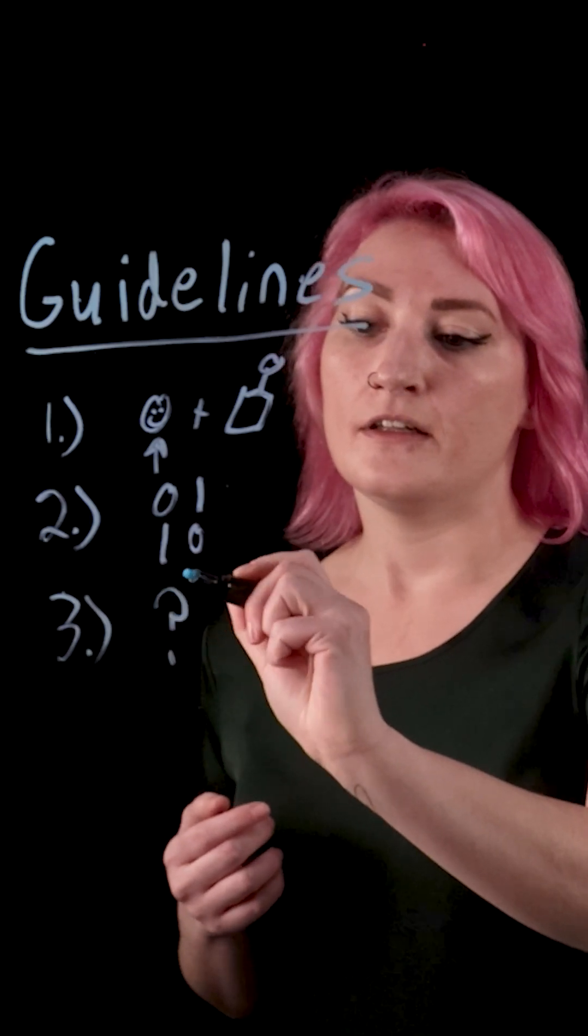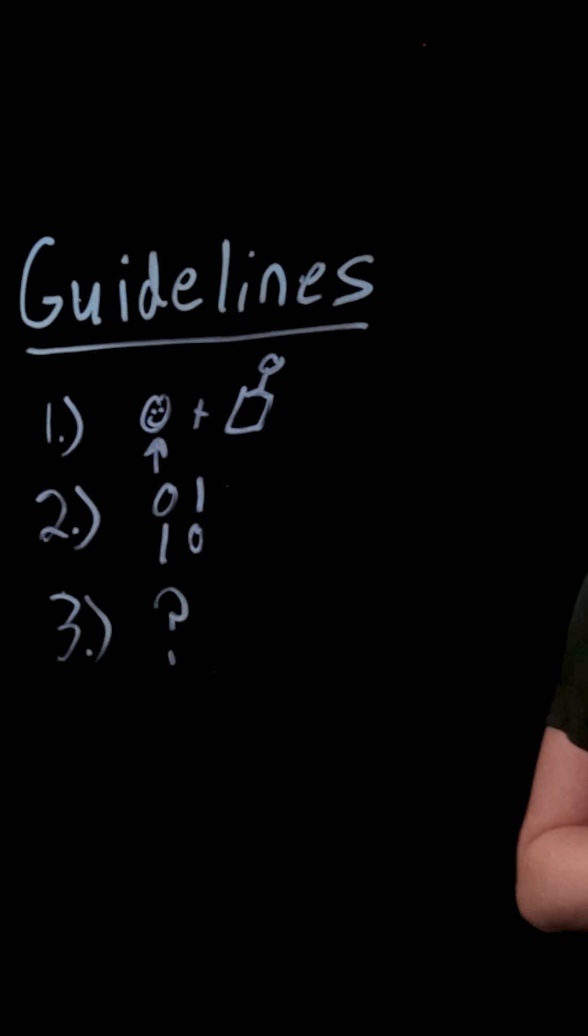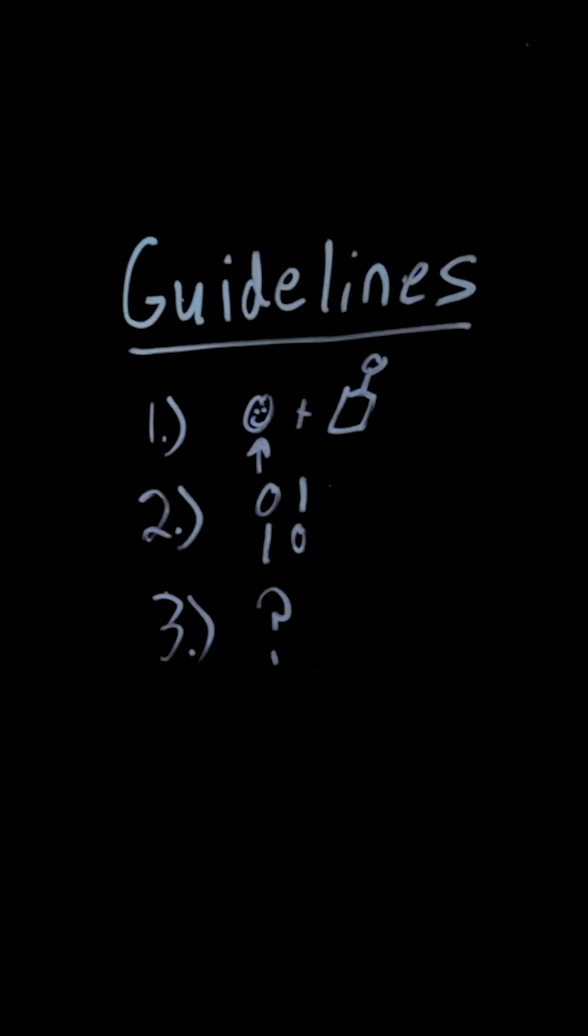Number three, solutions have to be transparent and explainable. And what this means is that we need visibility into who is training the system, what data they're using to train the system, and also how all of this is going to affect an algorithm's recommendations to the end user.